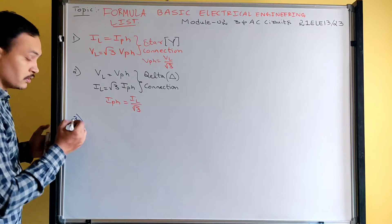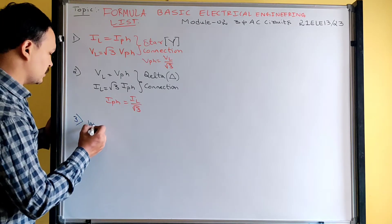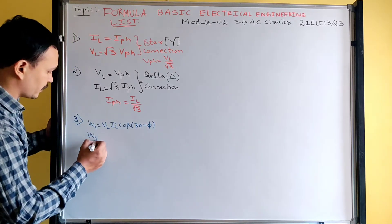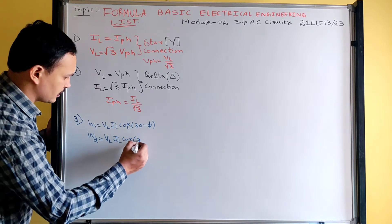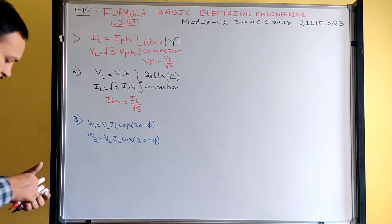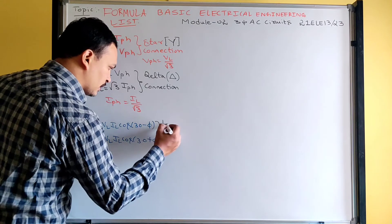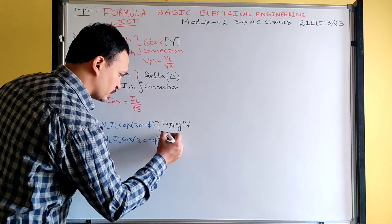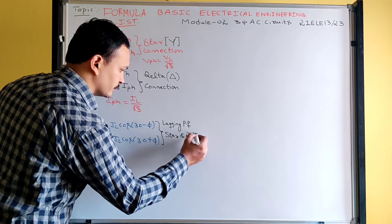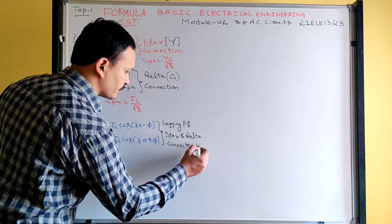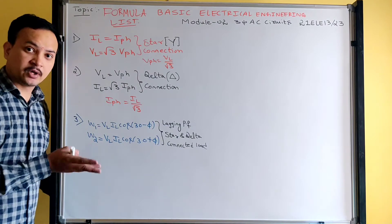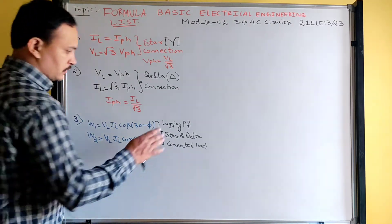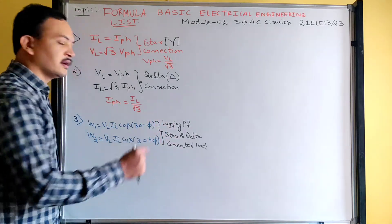For the two-wattmeter method with a lagging power factor load: W1 = VL·IL·cos(30° − φ) and W2 = VL·IL·cos(30° + φ). These two wattmeter readings are valid for lagging power factor load, for both star and delta connected loads. This formula for W1 and W2 is valid for both star as well as delta connection, but only for lagging power factor.